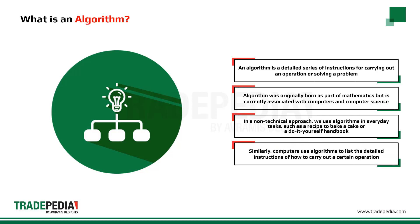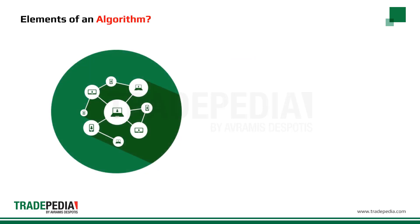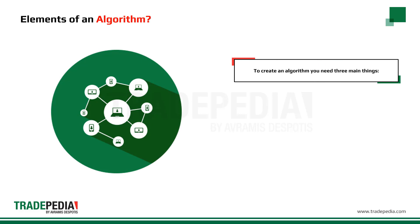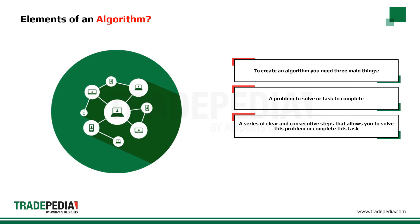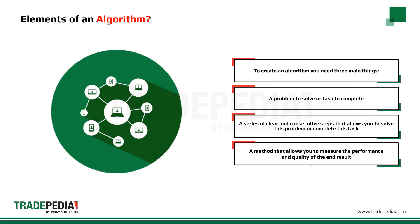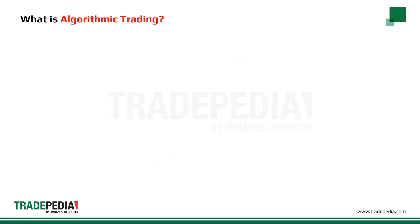Similarly, computers use algorithms to list the detailed instructions of how to carry out a certain operation. To create an algorithm you need three main things: a problem that you want to solve or a task that you want to complete, a series of clear and consecutive steps that allow you to solve this problem, and a method that allows you to measure the performance and quality of the end result — that is, a method to check if the steps outlined were able to solve the initial problem or not.